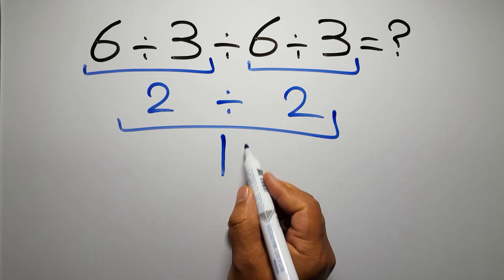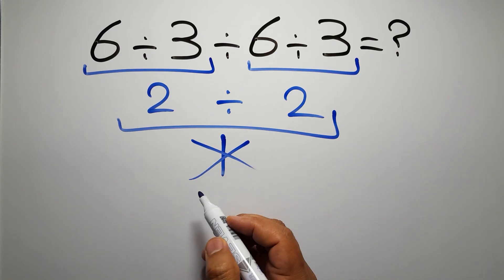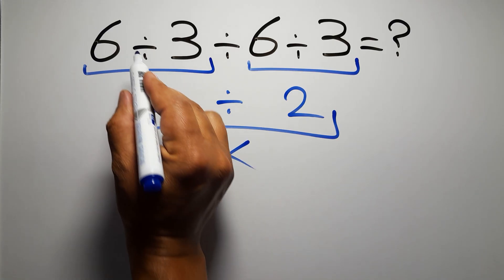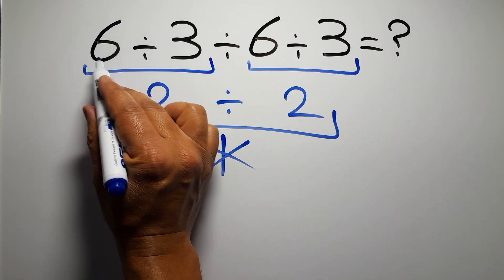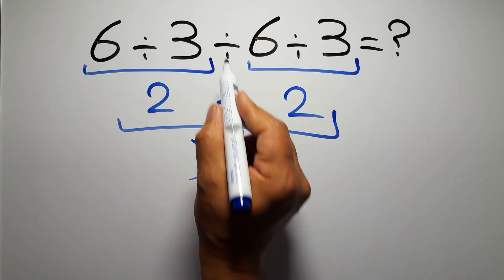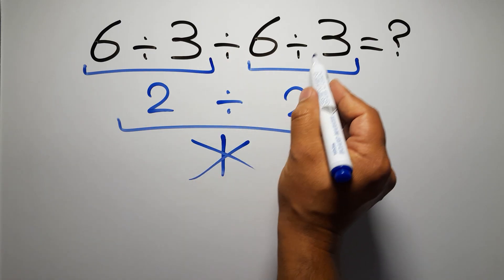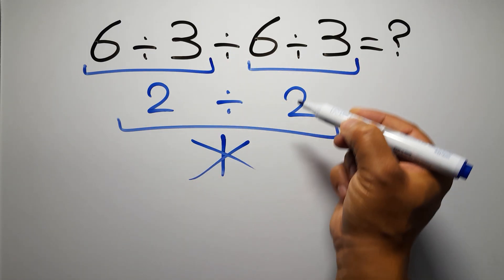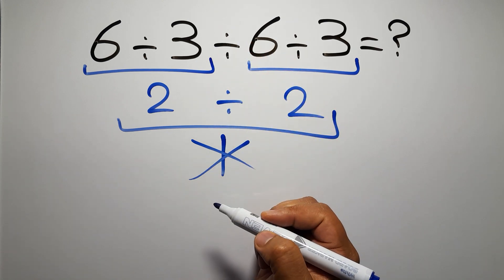But this answer is not correct, because according to the order of operations, when we have more than one division in an expression, we have to work from left to right. So here first we have to do this division, then this division, and finally this division. If we do this division before this division, it is wrong.